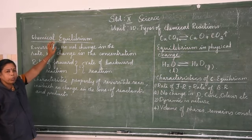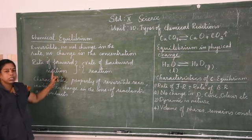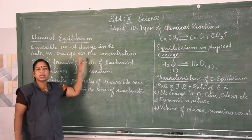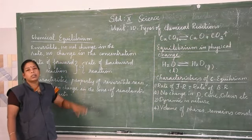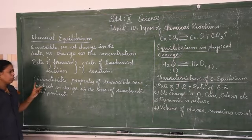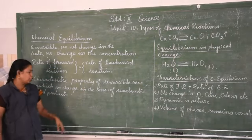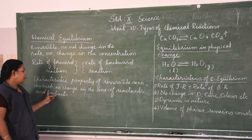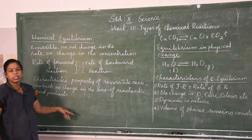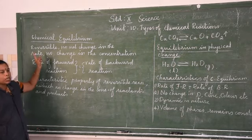The state of chemical equilibrium is attained when the rate of the forward reaction is equal to the rate of the backward reaction — that state is called the equilibrium state. The equilibrium state is a characteristic property of a chemical reaction in which there is no change in the concentration of reactants and products.